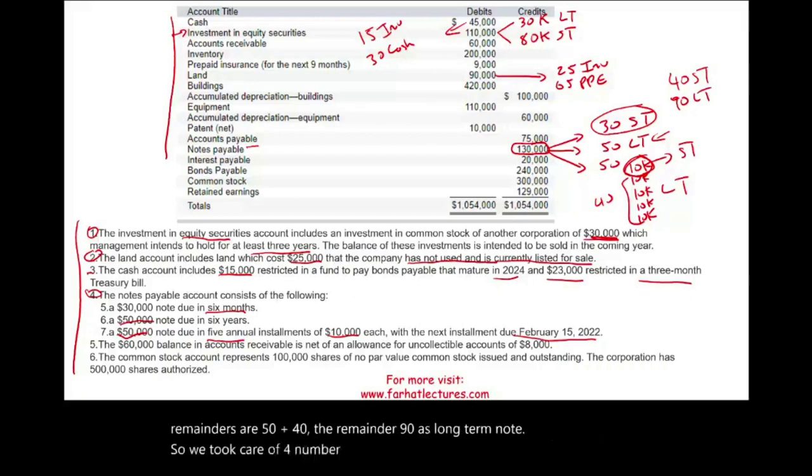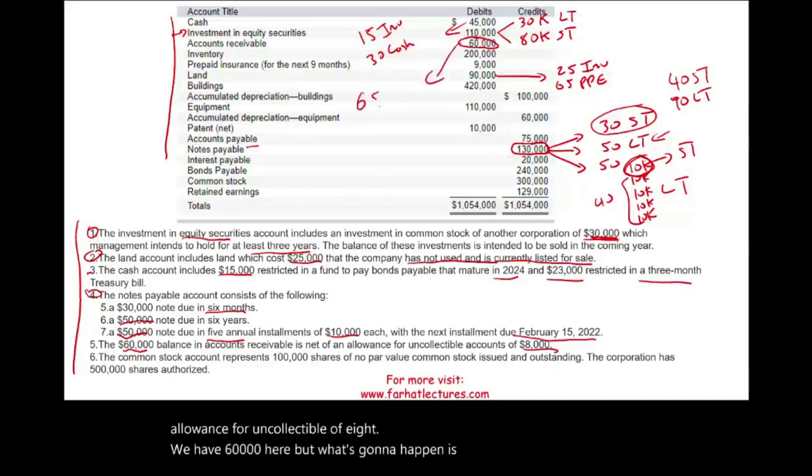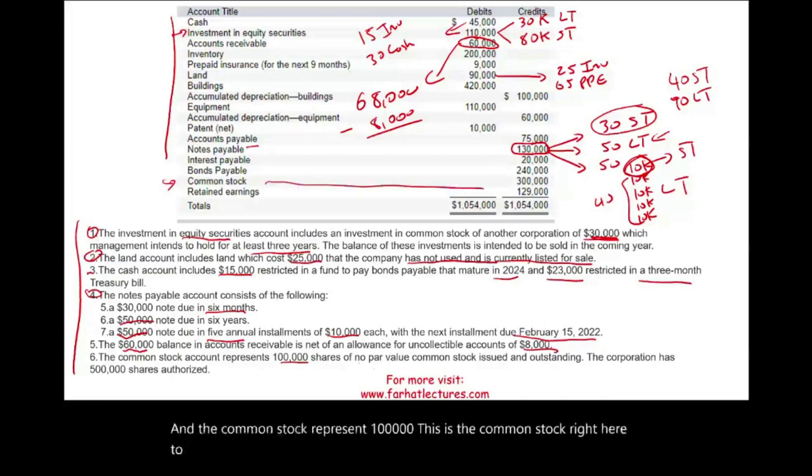Number five, the $60,000 balance in account receivable is net of the allowance for uncollectible of eight. Well, we have $60,000 here, but what's going to happen is we're going to have to show it at $68,000, then subtract $8,000 of allowance. And the common stock represent $100,000. This is the common stock right here. Represent $100,000 shares of no par value common stock issued and outstanding. The corporation has half a million shares authorized. Simply put, we have to disclose this information on the balance sheet.